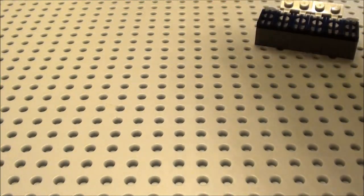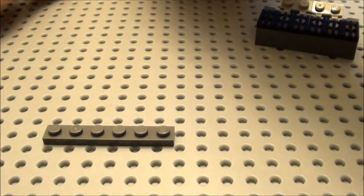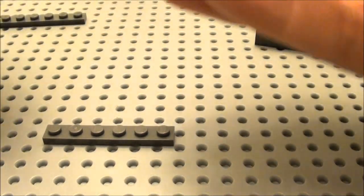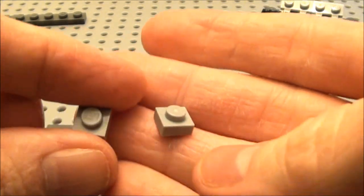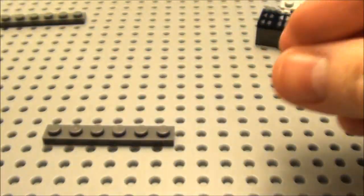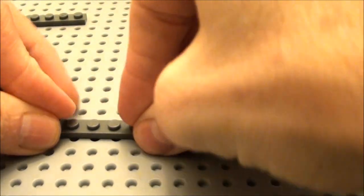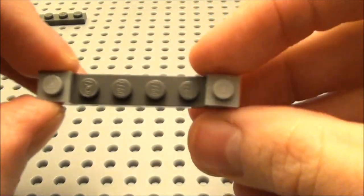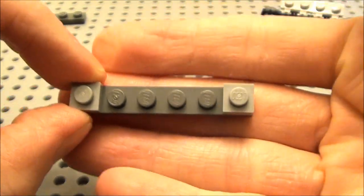Now we're going to make the lid to our barbecue. I'm going to take a 1 by 6 plate. I'm going to take two light gray 1 by 1 plates. We're going to place them on either end here. And this is going to be the spot we'll attach our hinge.